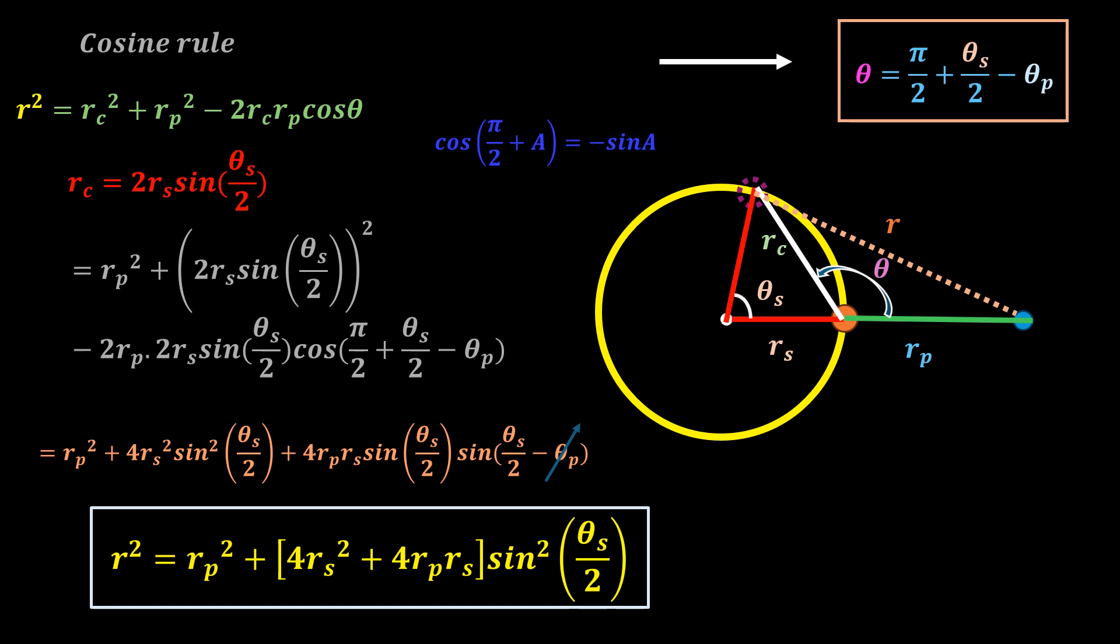So, you can see that if rs is equal to zero, the equation reduces to r equal to rp, the radius of the planet, and this is the approximation that is always used in solar system analysis.